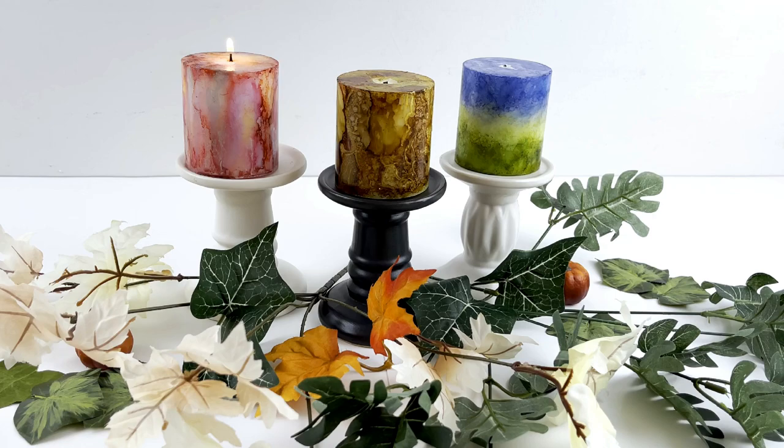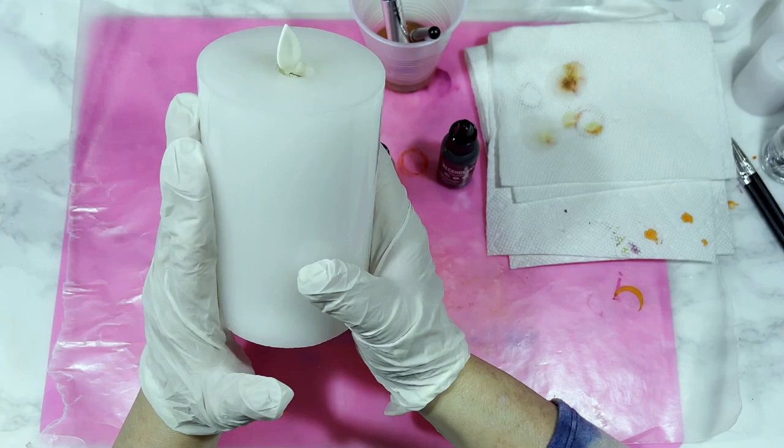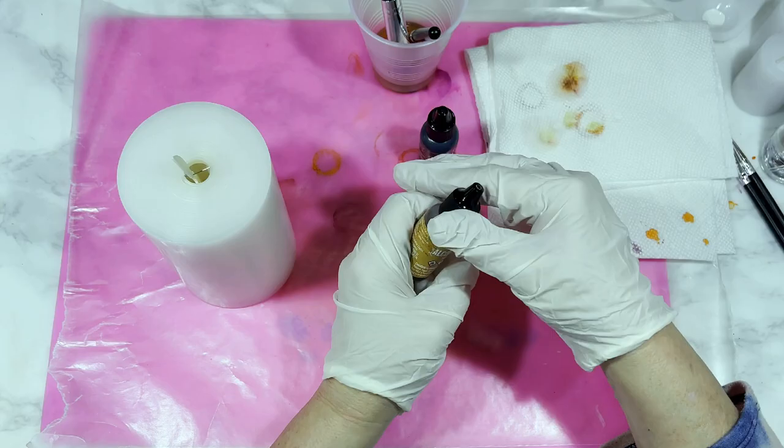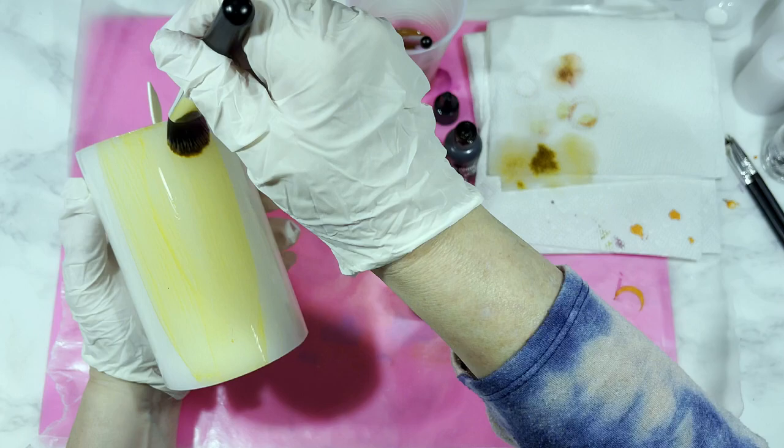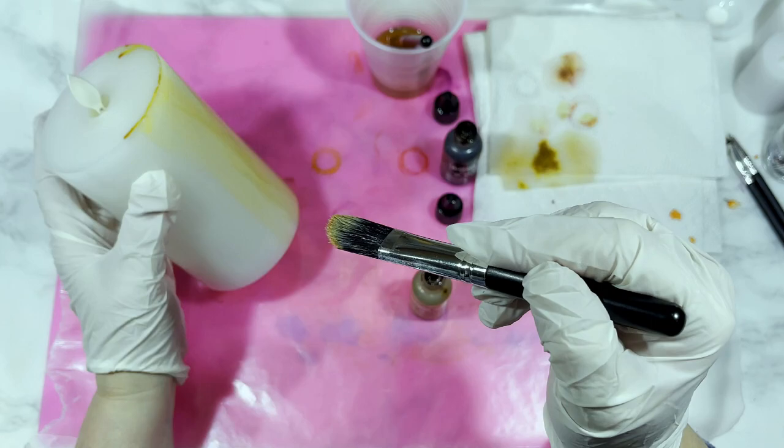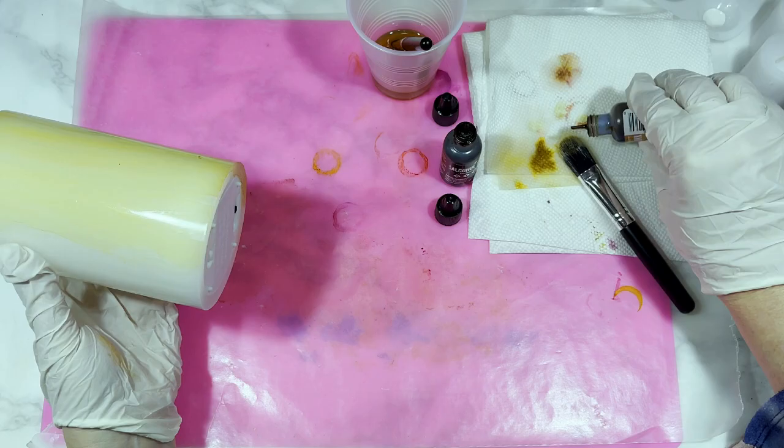DIY number two. Switching gears. We're using this large flameless candle. I got this one on Amazon. I'll link it below but I know for a fact you can get the same size flameless candle at Dollar Tree so that's an option too. And you know I cannot do an alcohol ink video without doing a woodgrain effect. I just can't help myself. You know this about me. But if you have not seen any of my other alcohol ink woodgrain videos before I will gladly link all of them in the description box below.